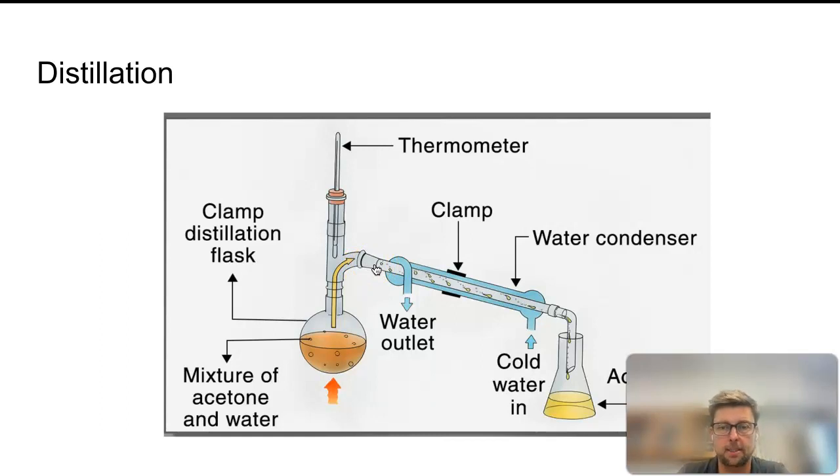Because of gravity and the tilt, those acetone droplets will make their way down and land here in the collection flask. Here it looks like an Erlenmeyer flask and you'll get the more pure acetone landing here or the lower boiling point liquid.